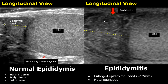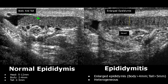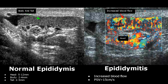Epididymitis is the inflammation of the epididymis. Here the head is enlarged and also heterogeneous. In these images we can see the body and tail of the epididymis — in epididymitis the body and tail are heterogeneous as compared to the normal images. On color Doppler there is increased blood flow due to inflammation, and the peak systolic velocity (PSV) will be more than 15 centimeters per second.